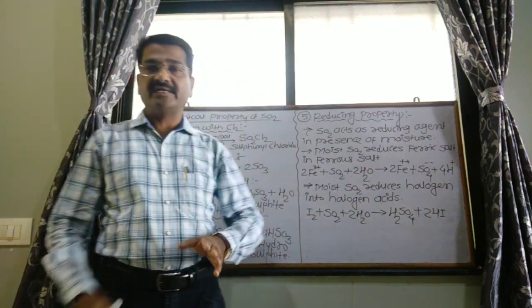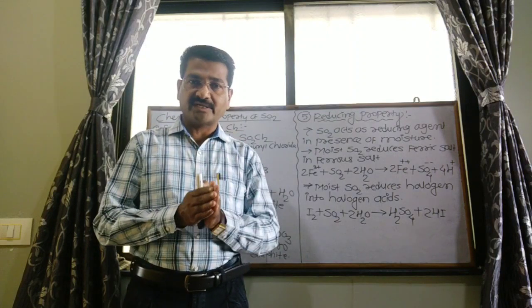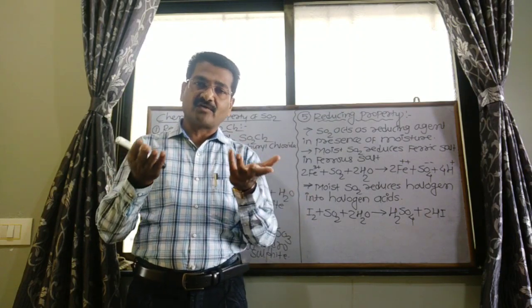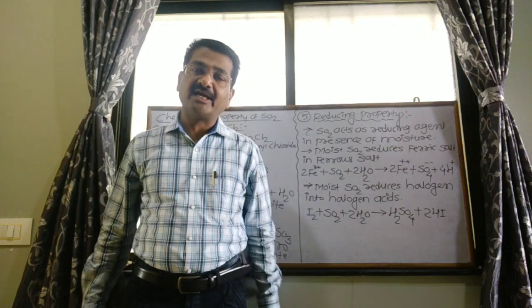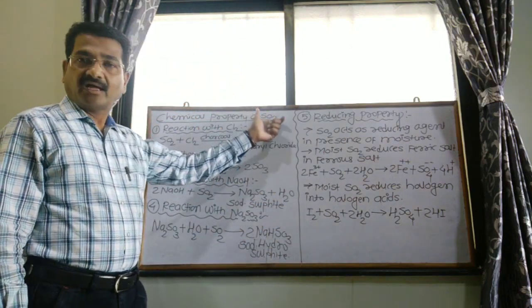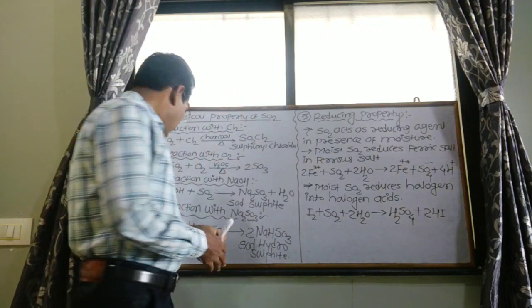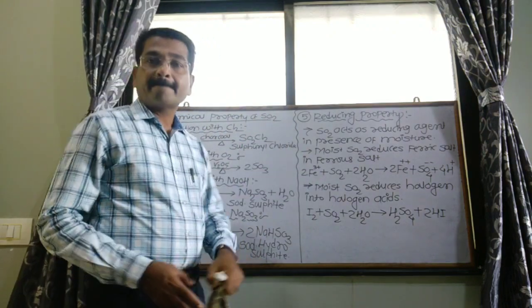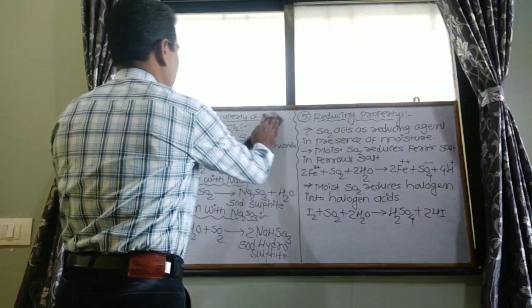All these are the chemical properties of sulfur dioxide — reactions of a variety of compounds with sulfur dioxide. Now see the next topic: uses of sulfur dioxide.